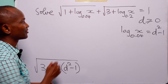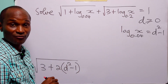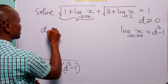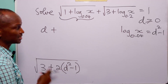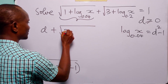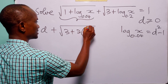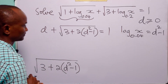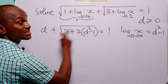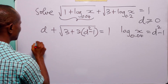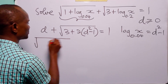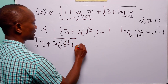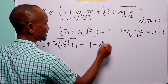Now we can rewrite the original equation in terms of d: d plus the square root of 3 plus 2 times (d squared minus 1) equals 1. Subtracting d from both sides gives us the square root of 3 plus 2 times (d squared minus 1) equals 1 minus d.